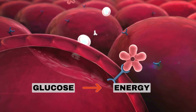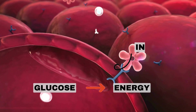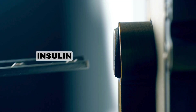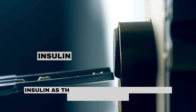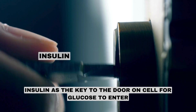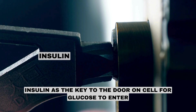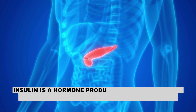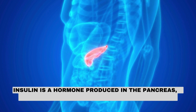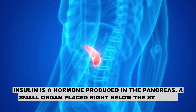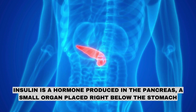Our body cells use this glucose to produce energy for its performance. But for the glucose to enter the cell, it needs insulin. Imagine insulin as the key to the door on a cell for glucose to enter. Insulin is a hormone produced in the pancreas, a small organ placed right below the stomach.